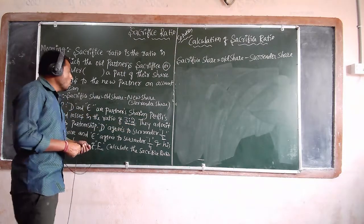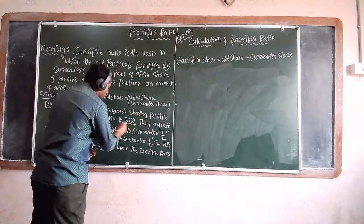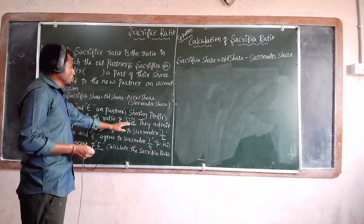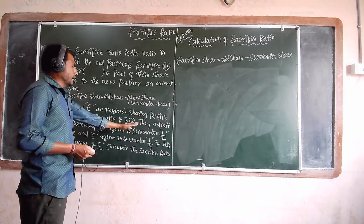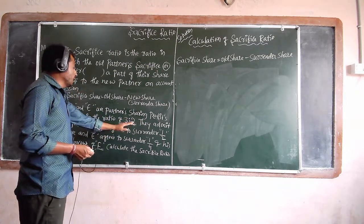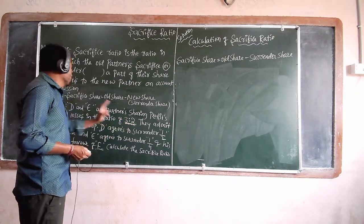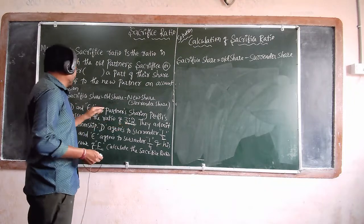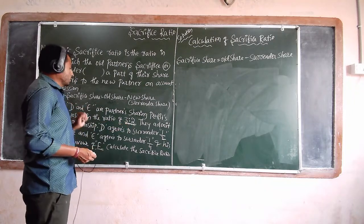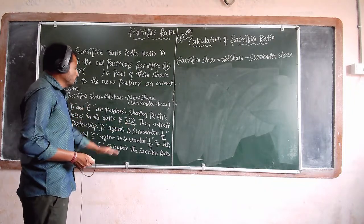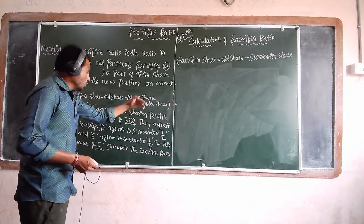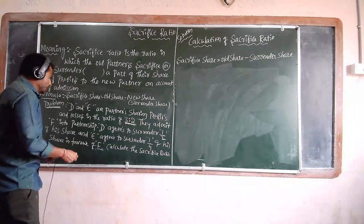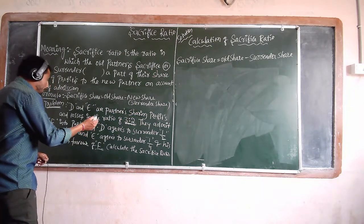D and E are partners. The total is 3 plus 2 equals 5. D's share is 3 by 5 and E's share is 2 by 5.